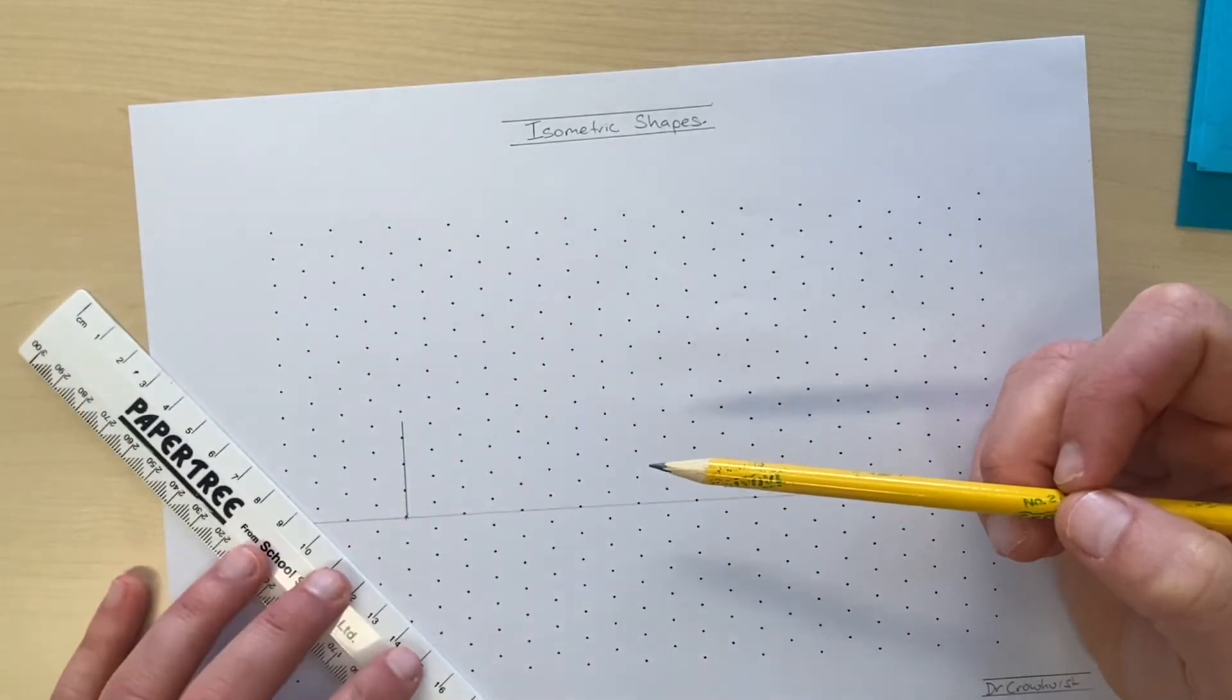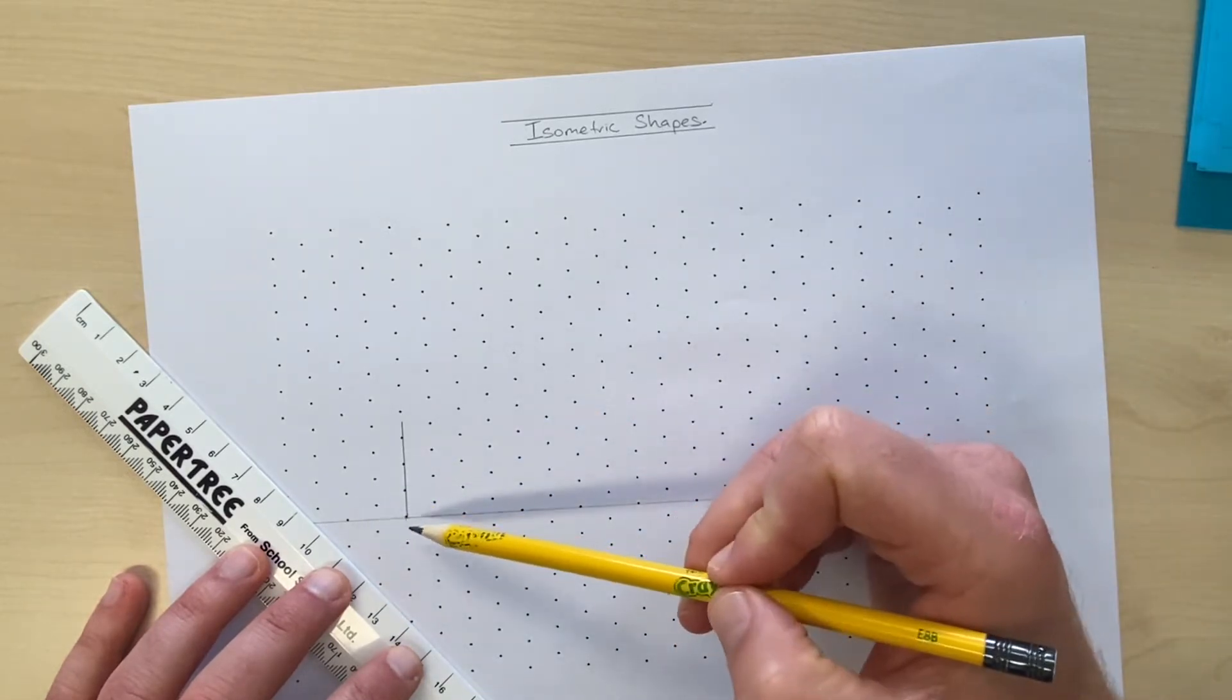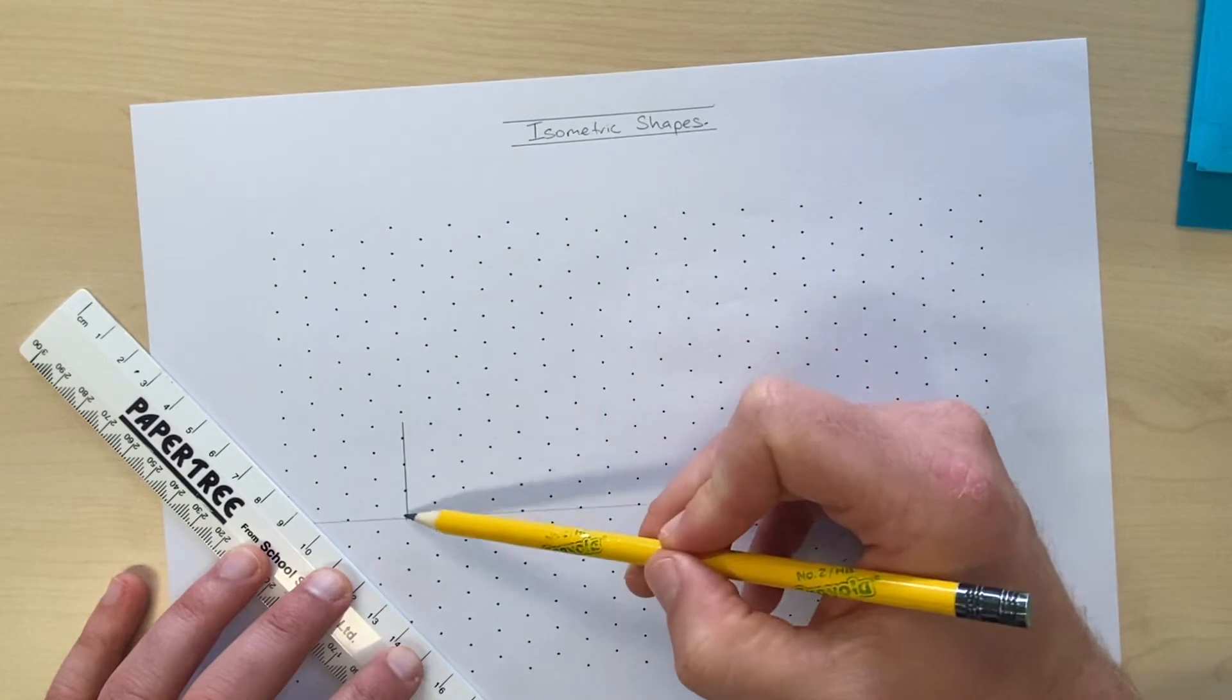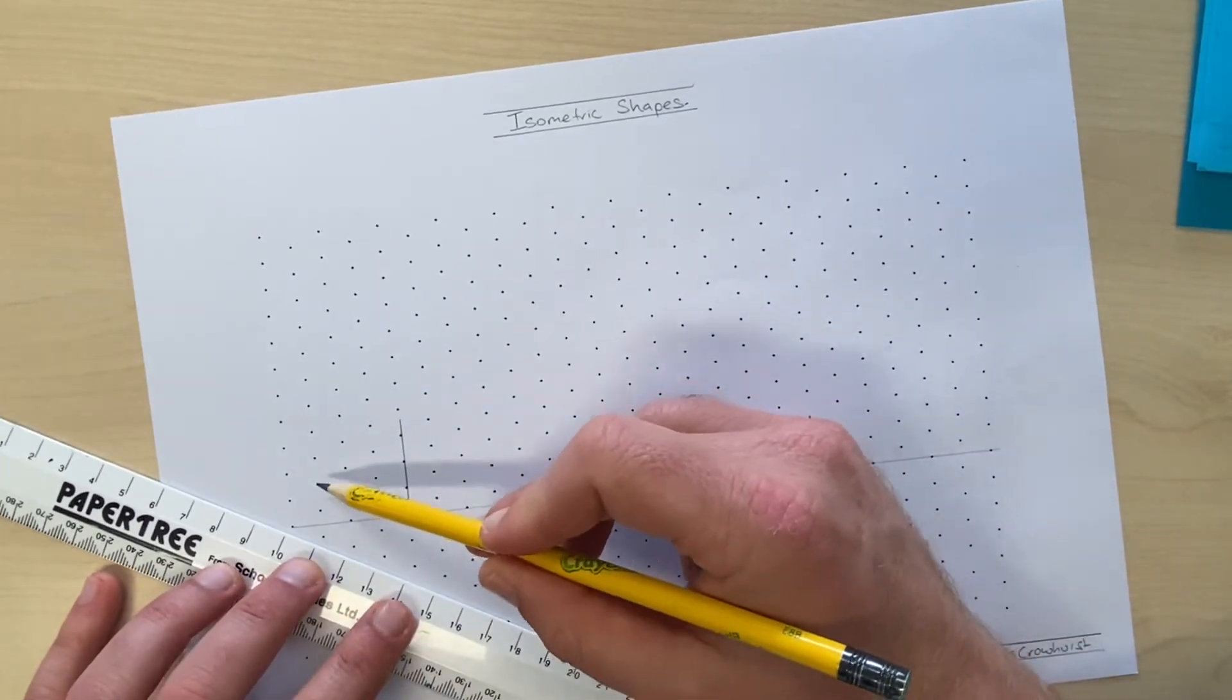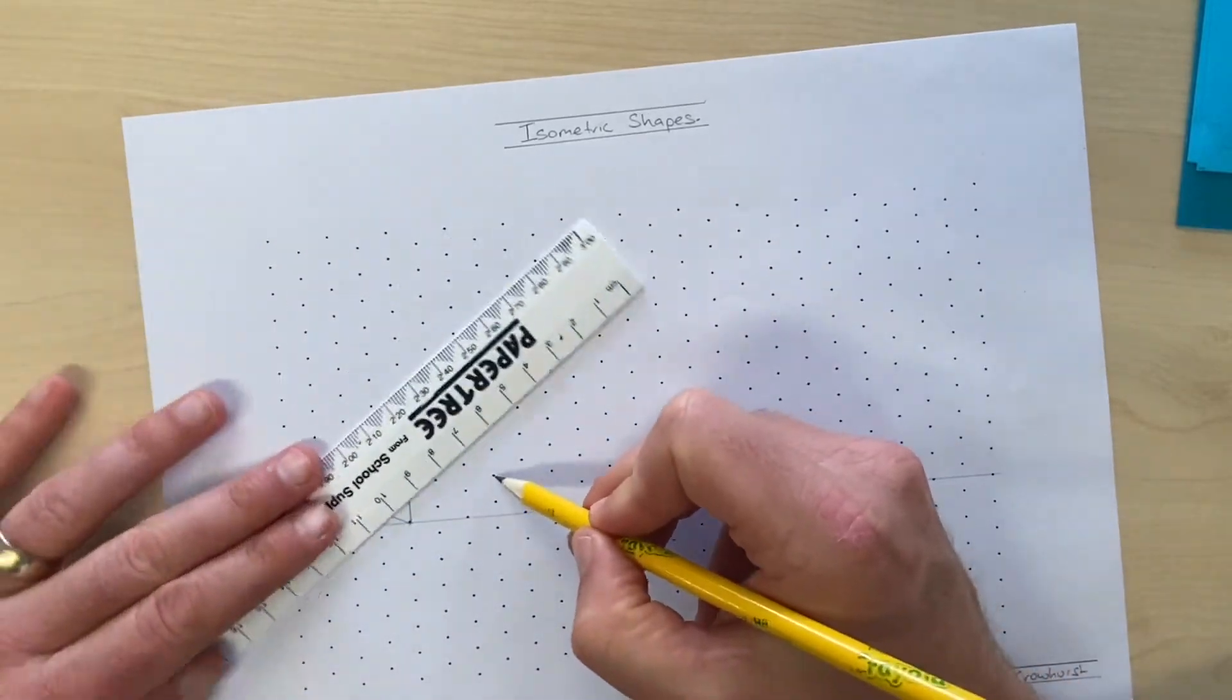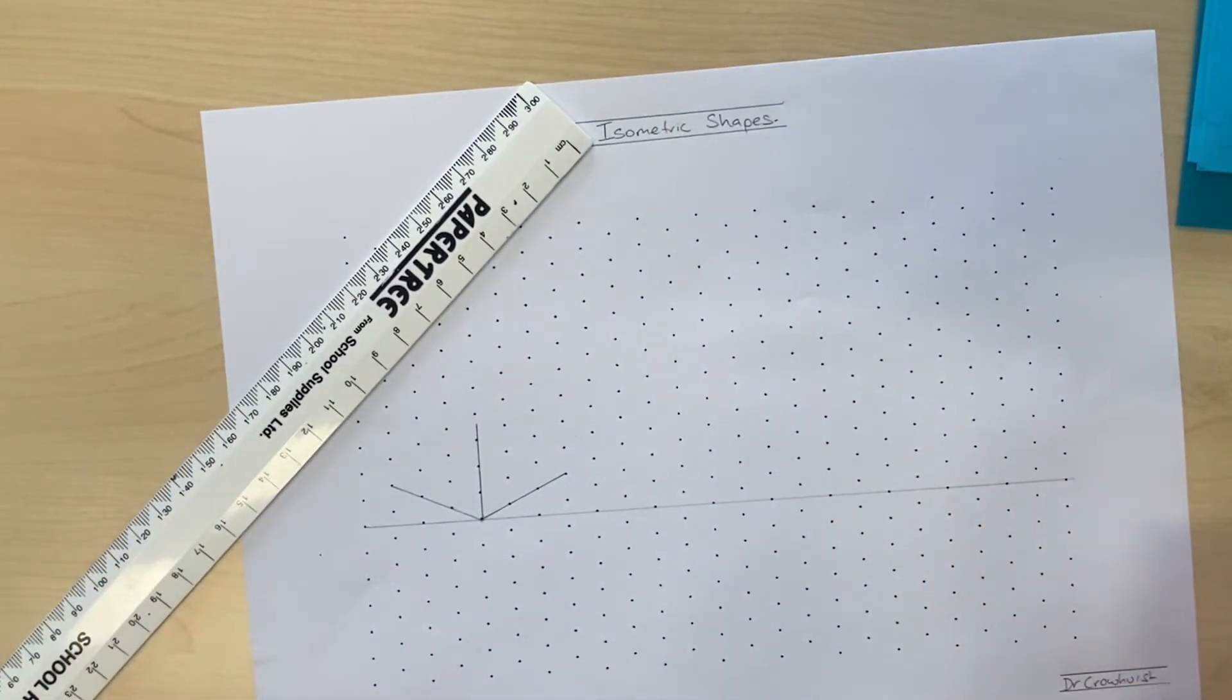Those are called isometric lines, which means that if you ruled a line on it, that runs at 30 degrees to a horizontal line. And the cool thing about these dots is that they're all one centimeter apart when they're measured down the isometric lines. Not when you measure straight up and down vertically, but when you measure that way. So if I go one, two, three, I know that that's going to be three centimeters there. And so I'm going to mark the bottom of my cube like that and the bottom of my cube like that. Why don't you go ahead and start your shape like that?